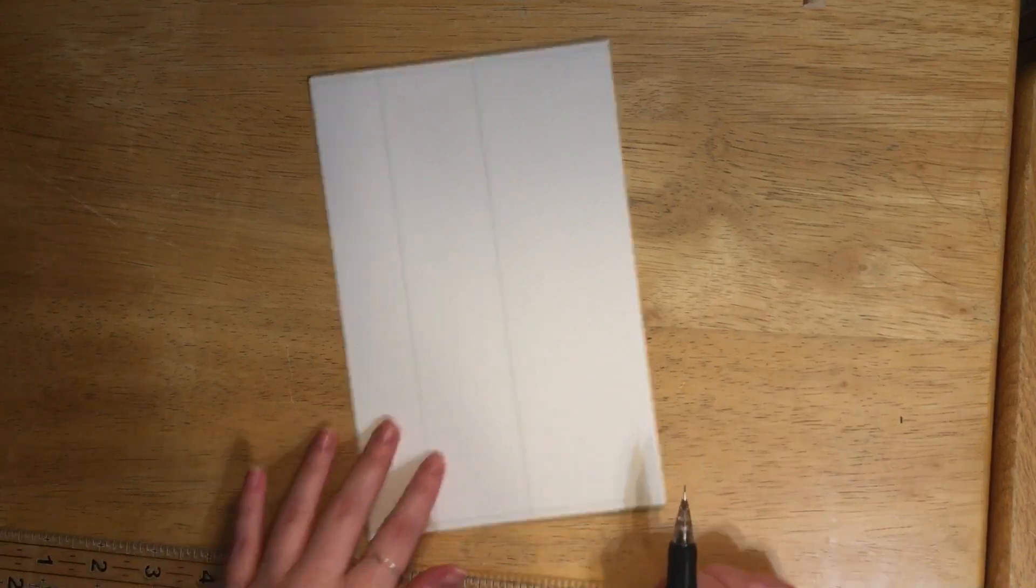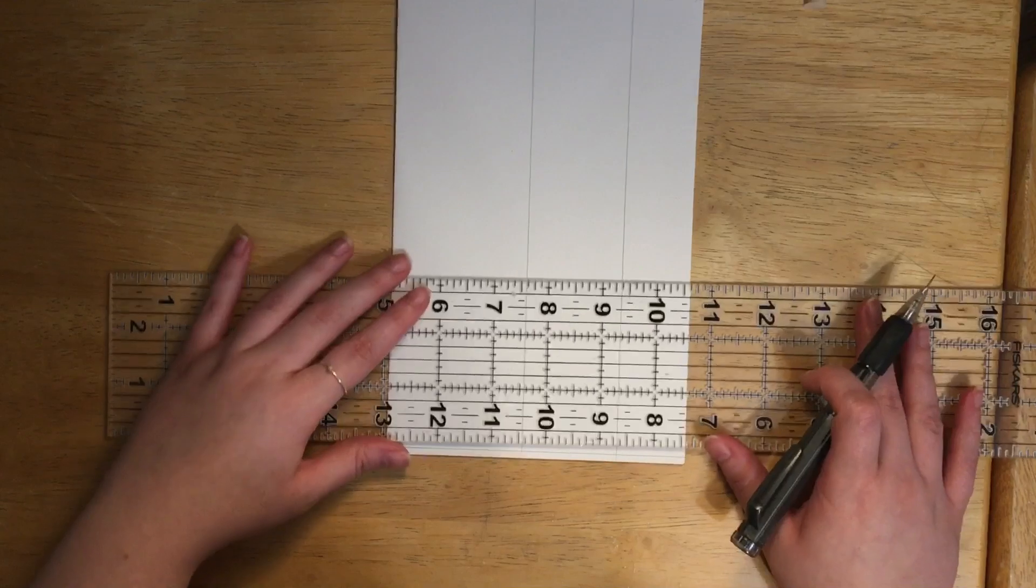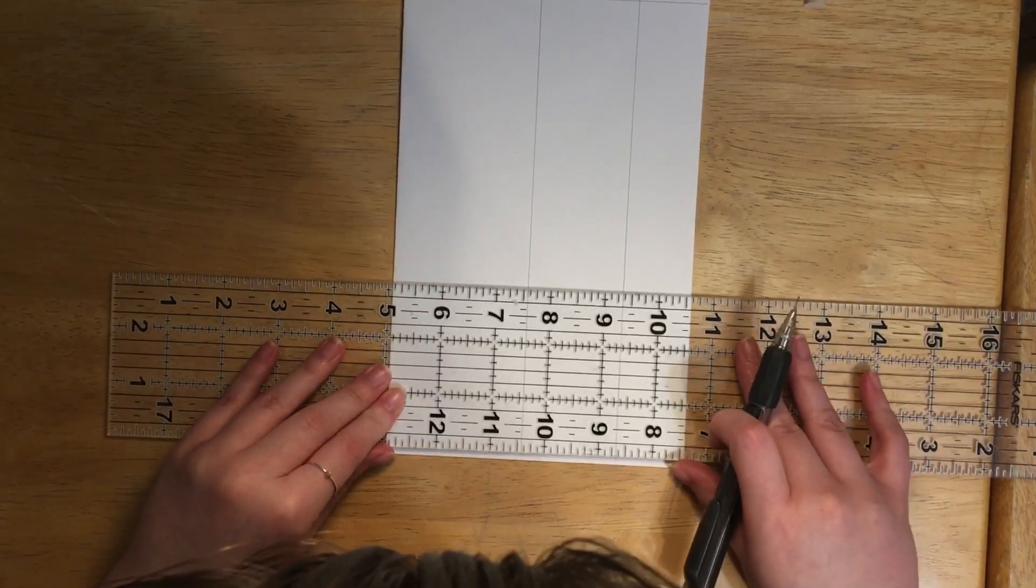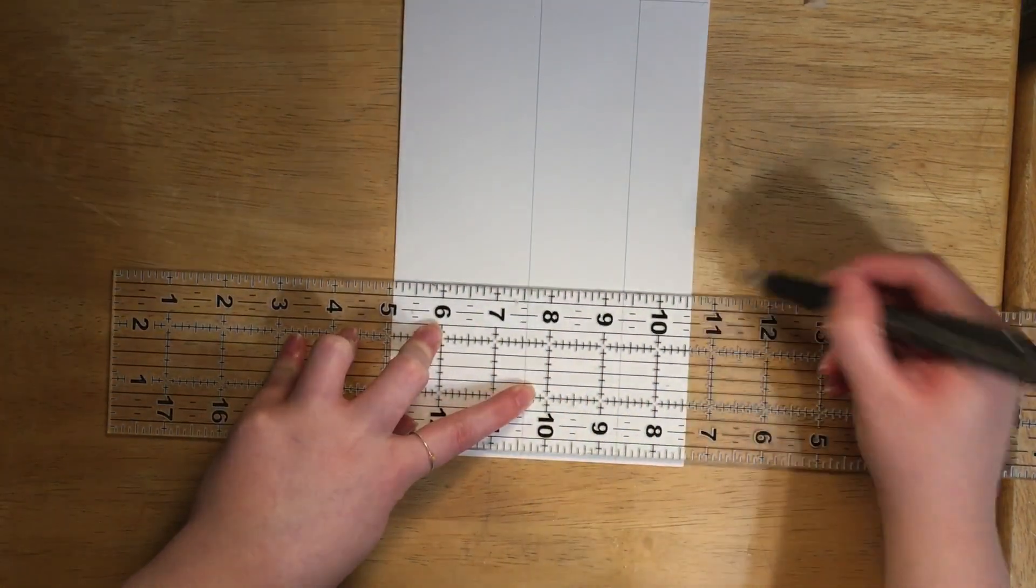And then from there we want to go at the top of our page, we're gonna go down three inches from our eighth of an inch line. Okay, so there's our three inch mark. And then the next line, it's supposed to be three and a fourth. It looks slightly smaller on my template.